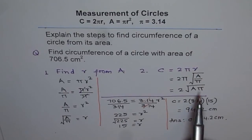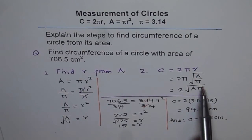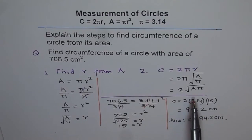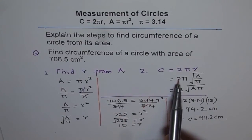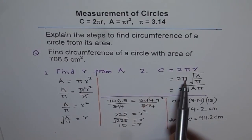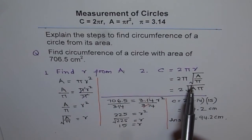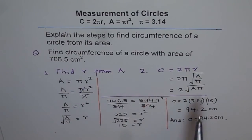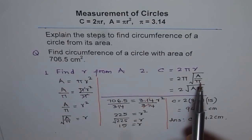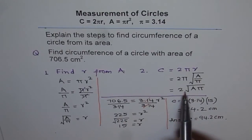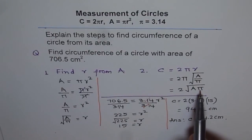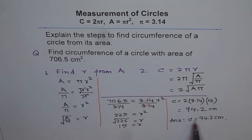You can check your answer using one of these formulas — that is an exercise for you. You can calculate C straight away using: 2 times 3.14 times the square root of area (706.5) divided by 3.14. See what you get — do you get the same answer? Or you can apply the formula: 2 times the square root of A multiplied by 3.14. You will find the same answer.